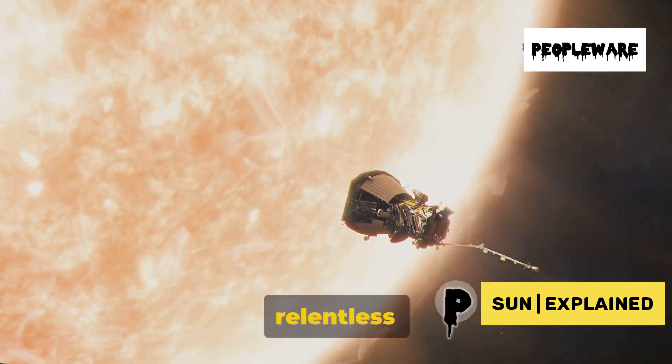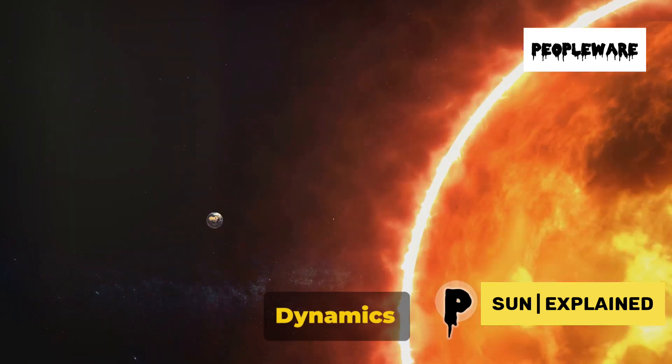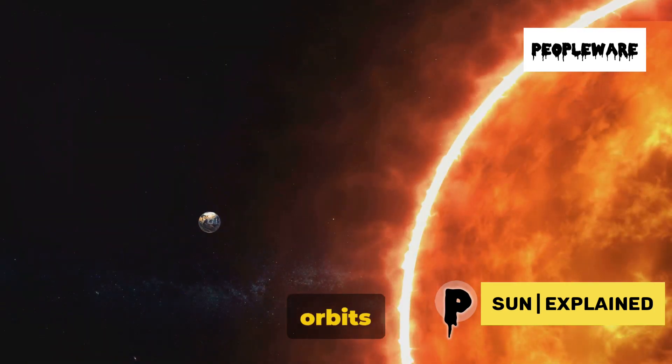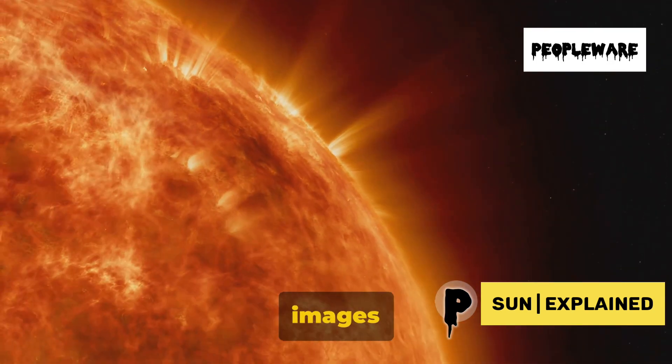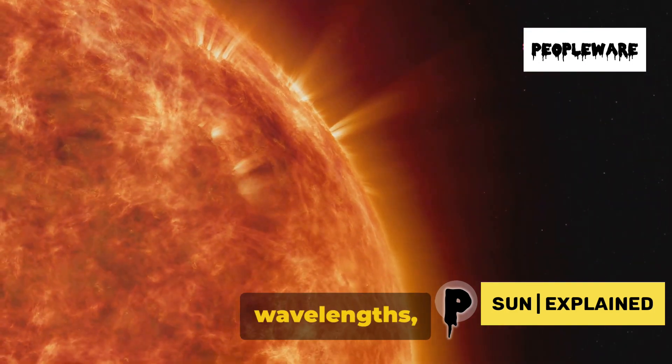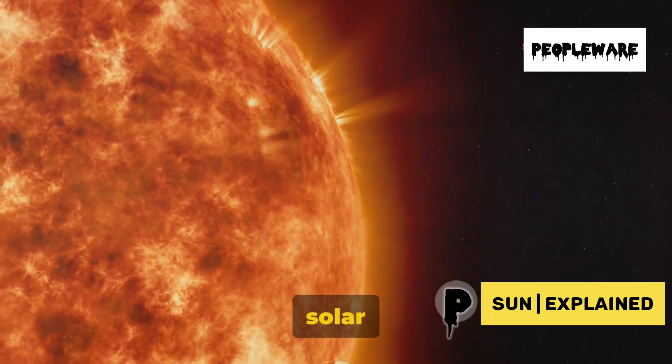Well, it's thanks to the relentless pursuit of knowledge by our space agencies. NASA's Solar Dynamics Observatory, or SDO, orbits our planet, constantly facing the Sun. It captures high-resolution images of the Sun in multiple wavelengths, helping us understand its complex magnetic field and the origins of solar wind.